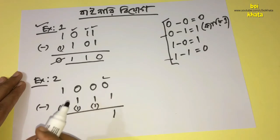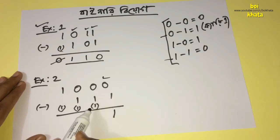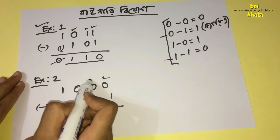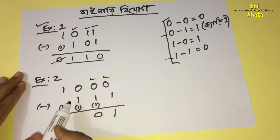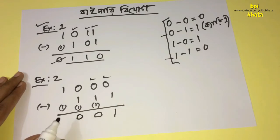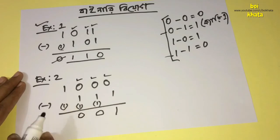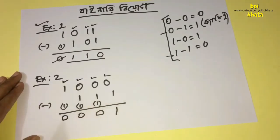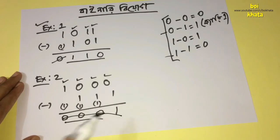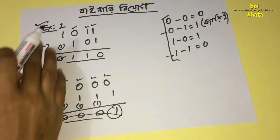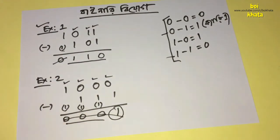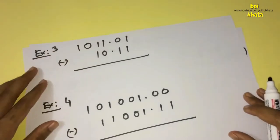0 minus 1 borrow: we get 1. That 1 and again with borrow gives another 1. So 1-1 gives 0. Now we move forward to the next line. 0 minus 1 borrow gives 1; with the borrow 1 comes 0. This line is complete, now next line.